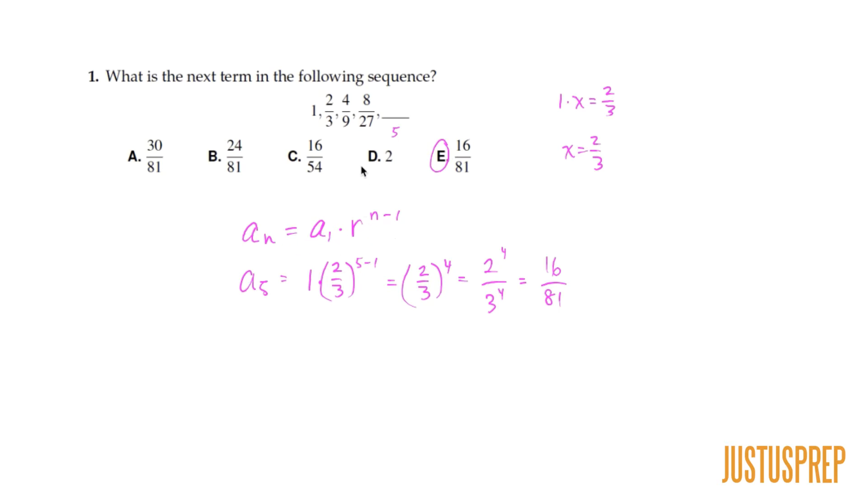Now we didn't have to do it this way. We could just look at these numbers and we can guess what the next number would be. So you can look at the numerator here. If one is really one over one, it goes from one to two to four to eight. So we know that it's being multiplied by two each time. So times two times two times two. So we know that this has to be 16.